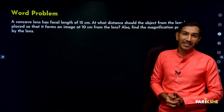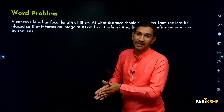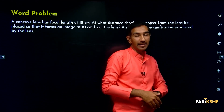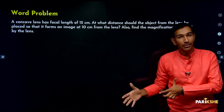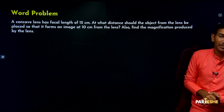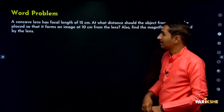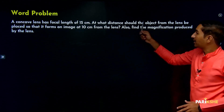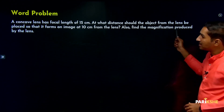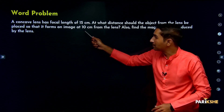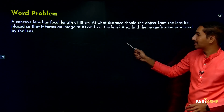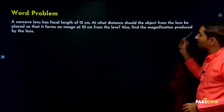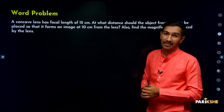Now we start word problems. Word problems depend on ray diagrams rules, image formation, magnification formulas, and mirror formula. So let's look at a word problem: a concave lens has a focal length of 15 centimeters. At what distance should the object from the lens be placed so that it forms an image 10 centimeters from the lens? Also find the magnification produced by the lens.